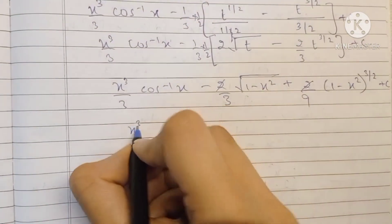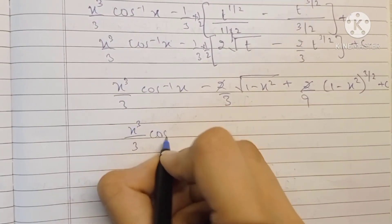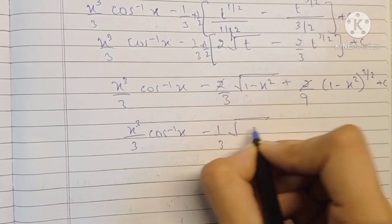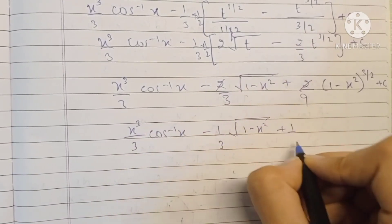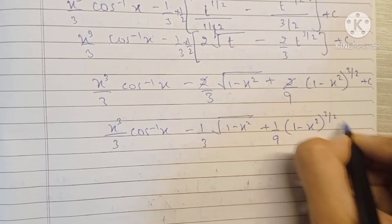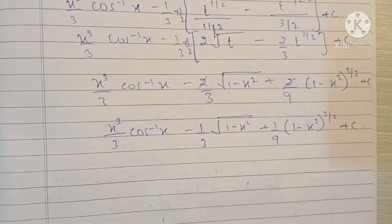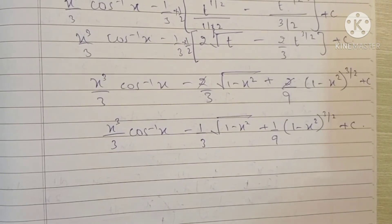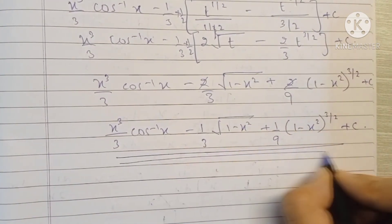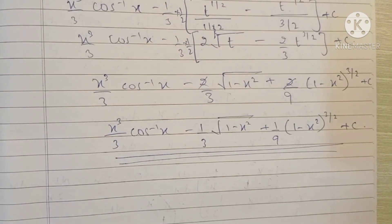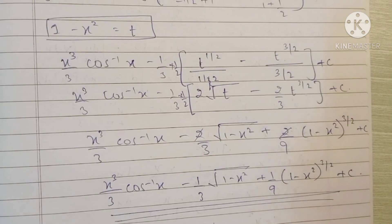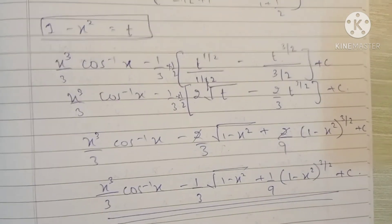The final answer is x cubed by 3 cos inverse x minus 1 by 3 root 1 minus x squared plus 1 by 9 times 1 minus x squared raised to 3 by 2, plus c. We really need to pay attention to avoid these small mistakes. This is the final answer as given in the textbook. That's it for today — thank you so much for watching, see you in the next video!